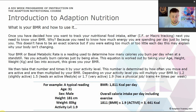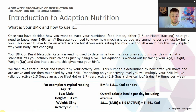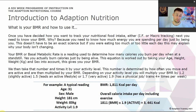For example, a typical reading for a 31-year-old male who is 181 centimetres and weighs 83 kilograms, with an activity level of 1.9 — meaning he has a very active job where he's on his feet all day and also trains four to five times a week, whether at a gym or outdoors — his BMR would be 1,811 calories per day.